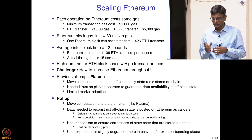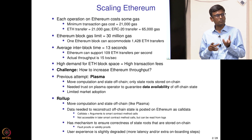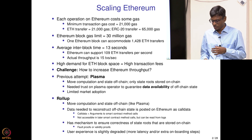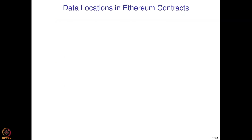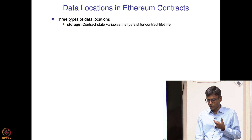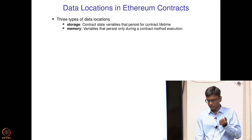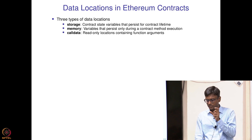The disadvantage of rollups is that user experience is slightly degraded — certain operations take more time. In Ethereum contracts there are three types of data locations. One is storage, where contract state variables are stored persistently. Then there is memory, which persists only during the current method execution and is not accessible afterward by any contract method.